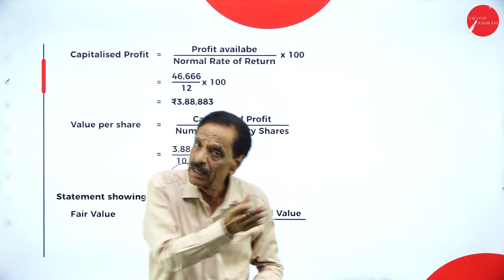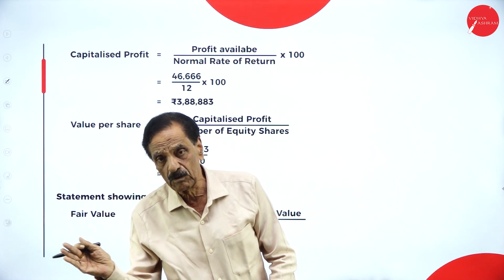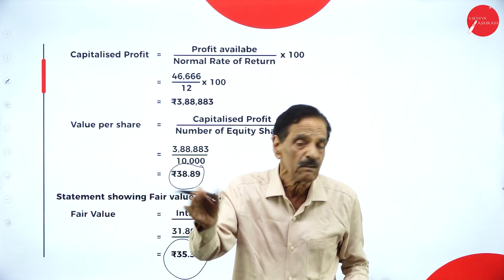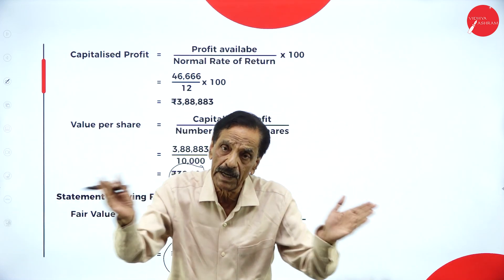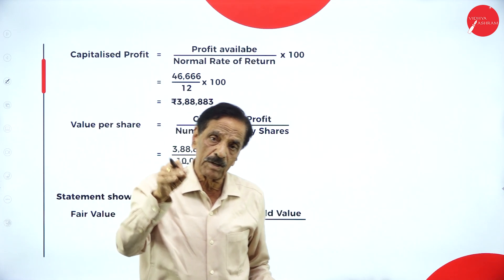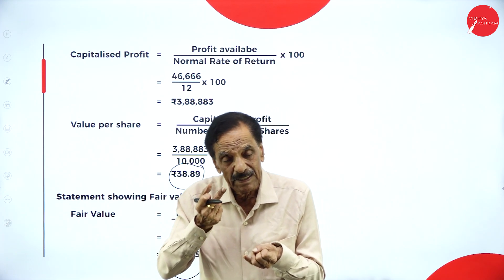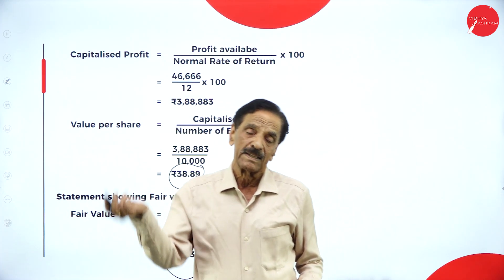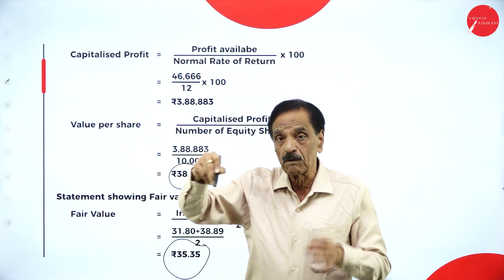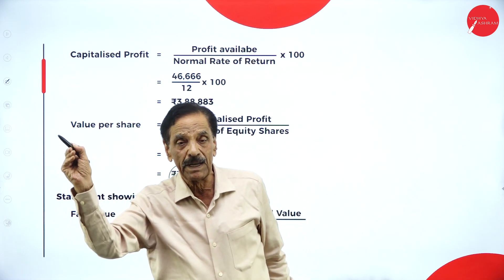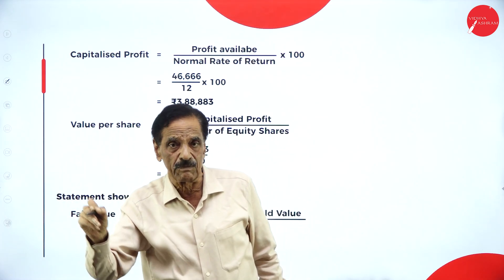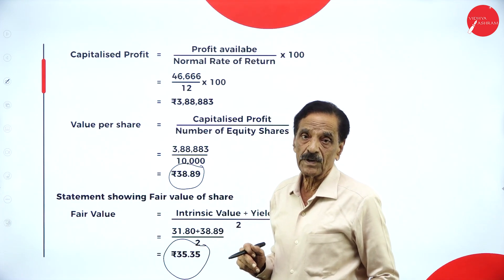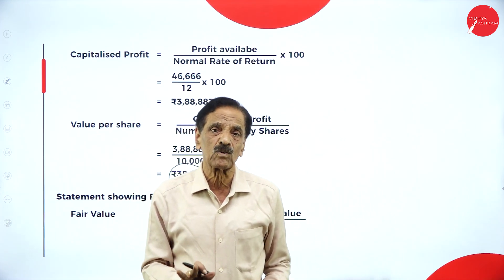To summarize: under the net asset method, total assets minus total liabilities gives capital employed, minus preference share capital gives capital employed for equity shareholders, divided by number of equity shares. Under the yield method: find average profit (total profit divided by number of years), deduct taxation, transfer to reserve, and preference dividend to get profit available to equity shareholders, then capitalize it by dividing by normal rate of return, then divide by number of equity shares. Fair value equals intrinsic value plus yield value divided by two.